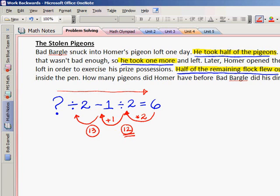We work backwards to our final step. On the way there, I divided by two. So I do its opposite, which is multiply by two. Thirteen times two gives me twenty-six. So we believe there were twenty-six pigeons in the loft at the beginning.